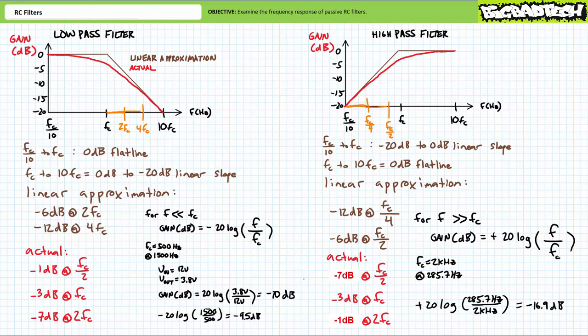Most folks confidently assume a negligible difference between the actual response and the straight line approximation at one-tenth and ten times the critical frequency; less stringent applications may allow use of these approximations closer to FC. A high pass filter example will be left for another lecture since this one is getting lengthy. A high pass filter takes output across the resistor rather than the capacitor. If frequency is less than FC, the circuit experiences half power or less; if greater than FC, half power or greater. Plots of high pass filters are essentially mirror images of low pass filters.